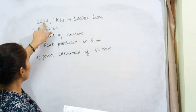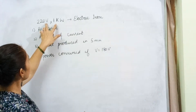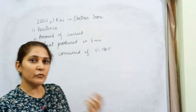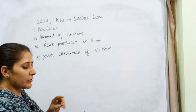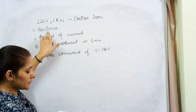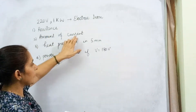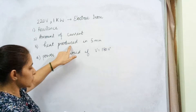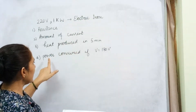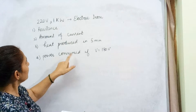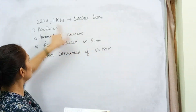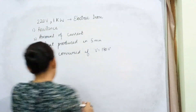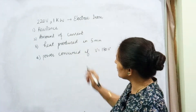Now to understand the concept better, we will do one numerical from your book. The example says: an electric iron is rated 220 volt and 1 kilowatt. This is the power rating of the electric iron. Under normal conditions it is working, and what we need to calculate is: (1) the resistance of the heating element, (2) the amount of current flowing through the heating element, (3) the heat produced in five minutes, and (4) the power consumed if the potential difference is 180 volt instead of 220 volt.